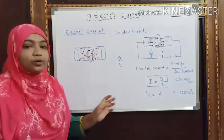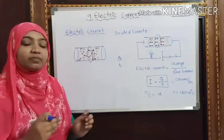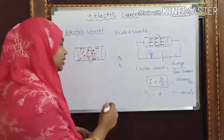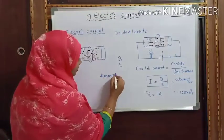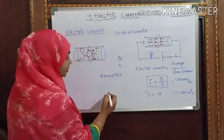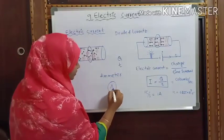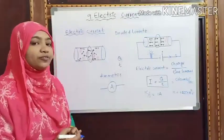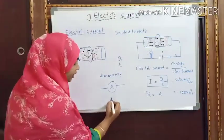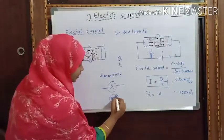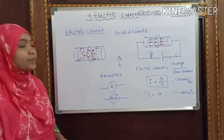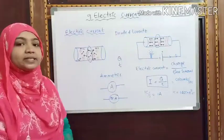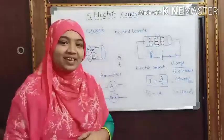We can measure the electric current in circuits with a device called an ammeter, and we represent it in a circuit with its symbol. We can measure small amounts of current in circuits with the help of a milliammeter. Students, hope this video helps you to understand the concept. Thank you.